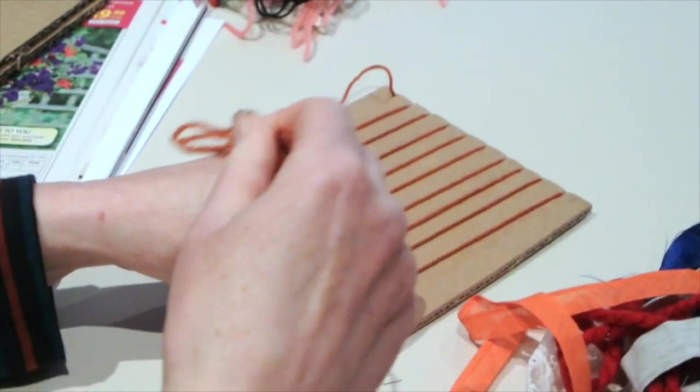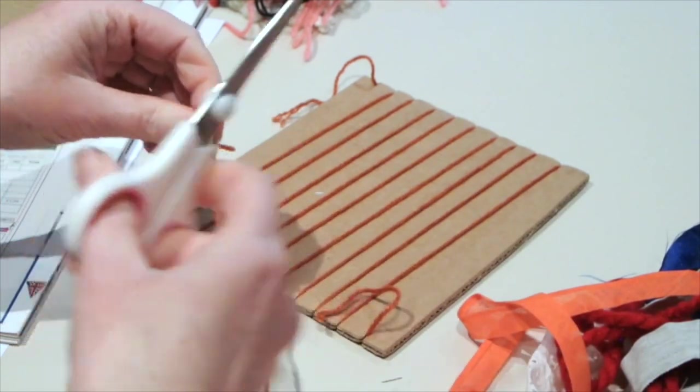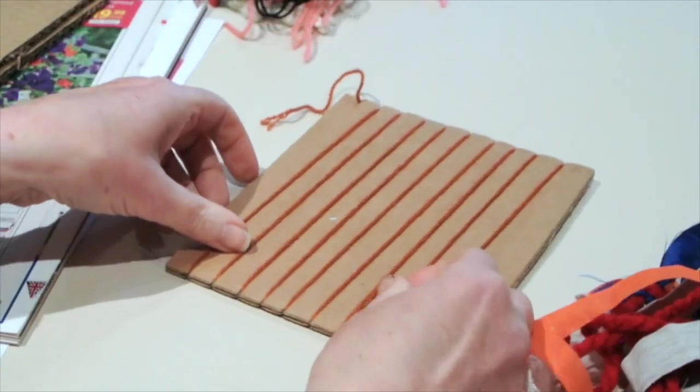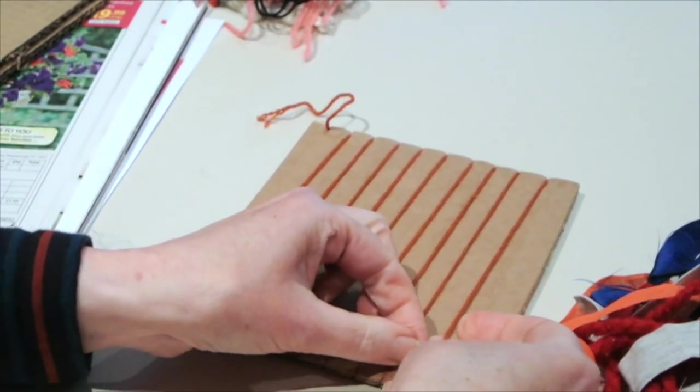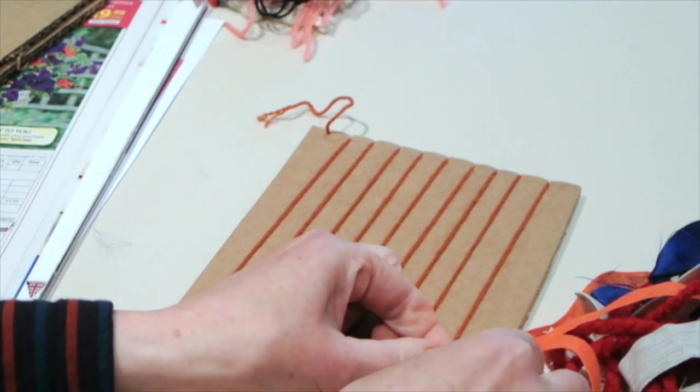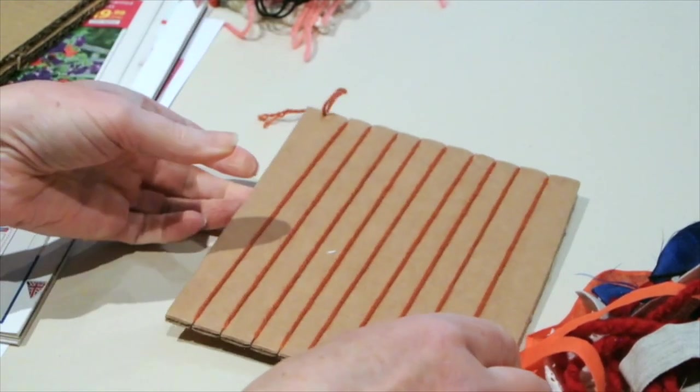Once I've finished weaving through my board to create my loom, I need to cut the end. Then with the loose end, I'm going to tie that into a knot so that it secures it.